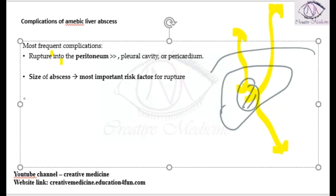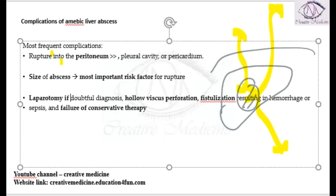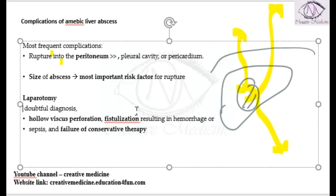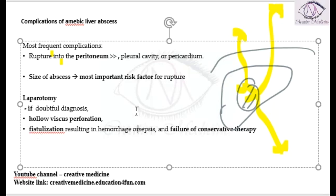If there is rupture into the peritoneal cavity, sometimes it is difficult to diagnose. If you have a doubtful diagnosis of rupture, then laparotomy is done. Laparotomy is indicated if there is a doubtful diagnosis, if there is a hollow viscus perforation, if there is fistulization resulting in haemorrhage or sepsis, or if there is failure of conservative therapy.